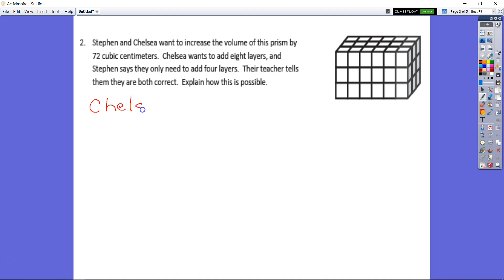In this case, Chelsea says that she's going to add eight layers. So if she's starting off with layers of nine, she's going to say, nine times eight. She's looking at it this way. She's looking at it as one, two, three, four, five, six. She's going to add eight more layers of nine. So she would add one, two, three, four, five, six, seven, eight, nine. So she's going to add eight layers of nine to get her 72.